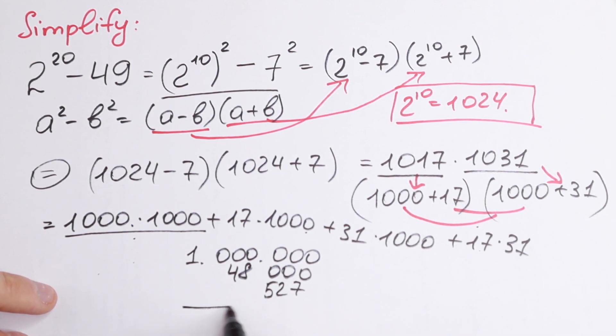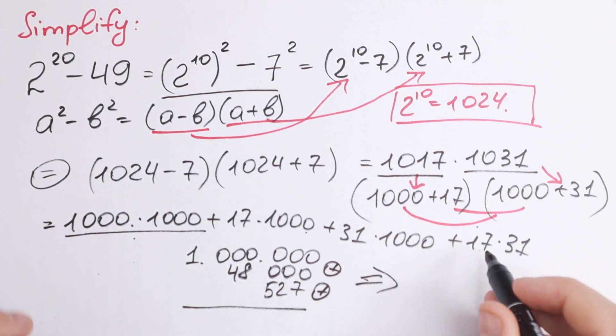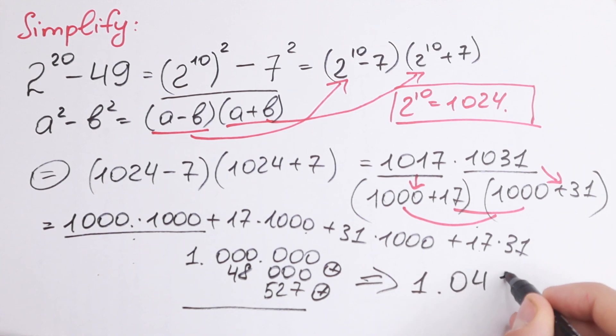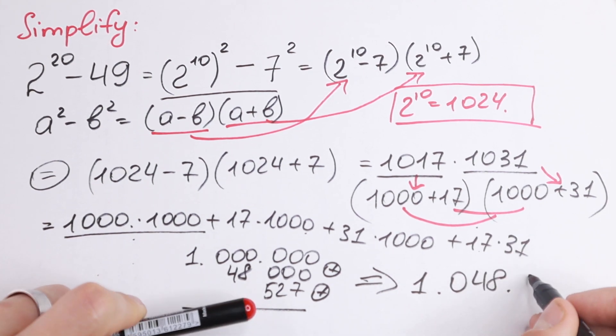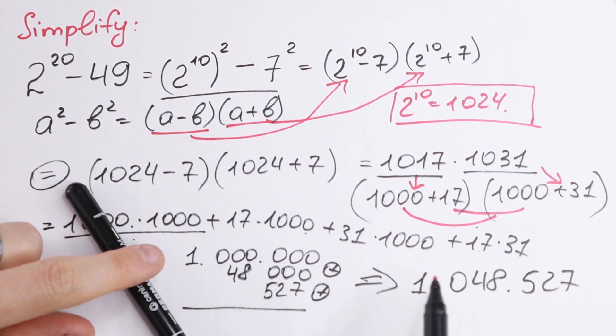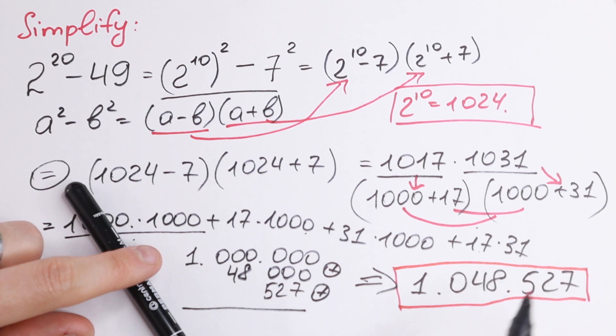And if we add all of these, as you can see, we need to add these because every time we will have plus. We need to add this one and this one. We will have our final result. Our answer right here 1 million. Right here we will have 48000. And the last step 527, which is our answer.